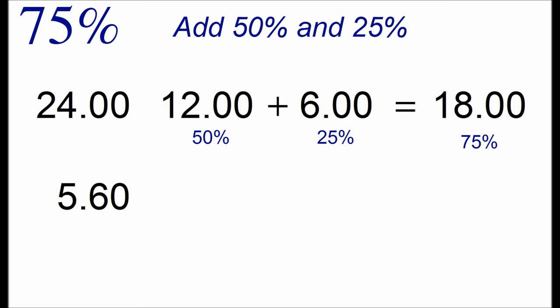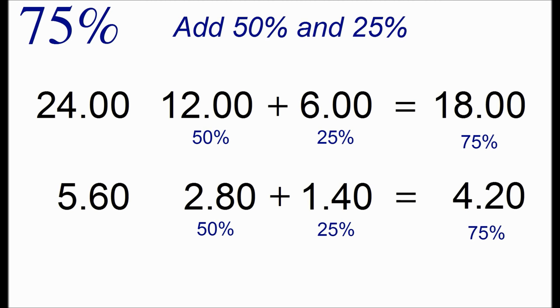We do the same thing for 5.6. Half of the number is 2.8. We take half of that number to get 1.4. And to get 75% we add these two numbers together, which is 4.2.